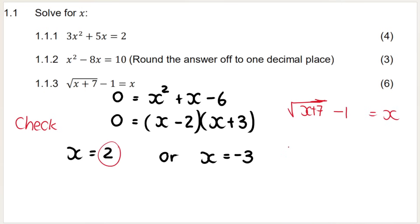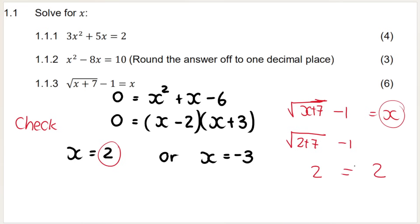Take 2 and put it in place of x: the square root of 2 plus 7, minus 1. You get the square root of 9 which is 3, minus 1, which equals 2. And putting 2 on the right-hand side also gives 2. So the left-hand side equals the right-hand side — this solution is correct.